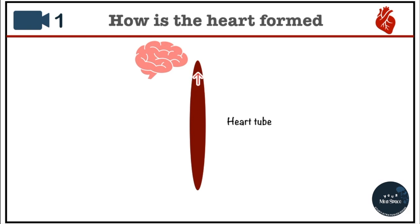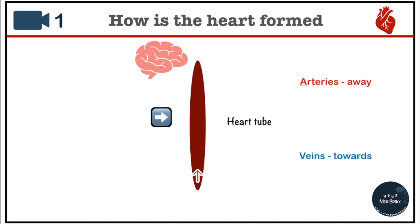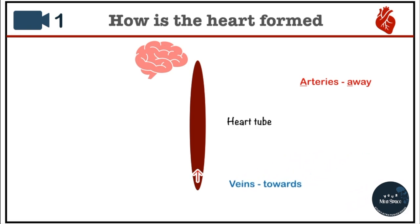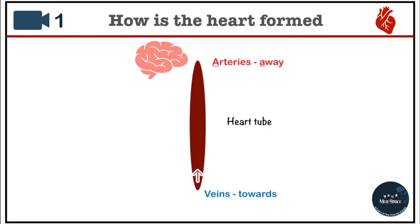The central part of this tube will become the heart. We know that arteries carry blood away from the heart and veins carry blood towards the heart — here's a way to remember it: A for arteries and A for away. So the bottom part of this tube will end up becoming future veins and the top part will end up becoming future arteries.